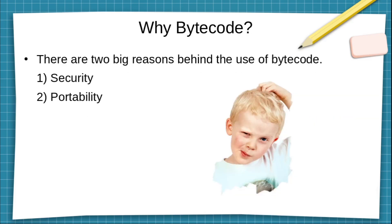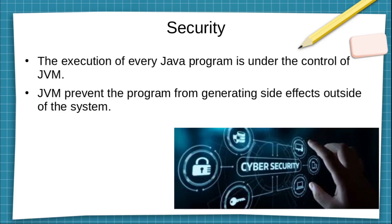Now the question is: why does Java use bytecode? There are two reasons — the first is security and the second is portability. During the development of Java, there was a new era of the internet, meaning the internet was growing at that time, so the basic concerns were portability and security.